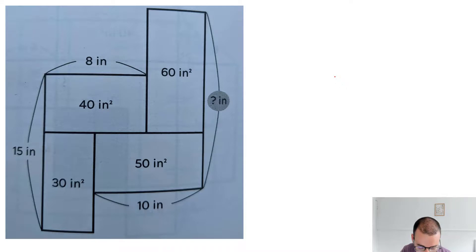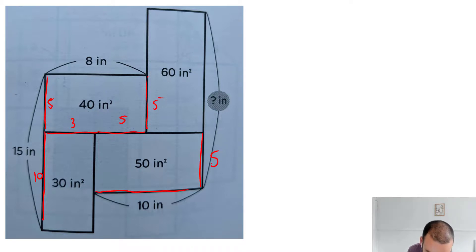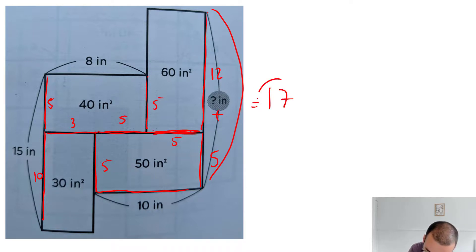Eight times five is 40, so this bit's five. This bit is 10 because it has to add up to 15. This bit is three — three times 10 is 30 — that means this bit is five. This bit's five, this bit's 10, so this bit is also five. This whole length is 10 and this whole length is 10. Five times what is 60? That's 12. So this whole length is 12 plus five, which is 17. Glorious.